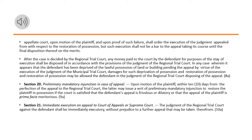Section 20. Preliminary Mandatory Injunction in Case of Appeal. Upon motion of the plaintiff, within 10 days from the perfection of the appeal to the Regional Trial Court, the latter may issue a writ of preliminary mandatory injunction to restore the plaintiff in possession if the court is satisfied that the defendant's appeal is frivolous or dilatory or that the appeal of the plaintiff is prima facie meritorious.